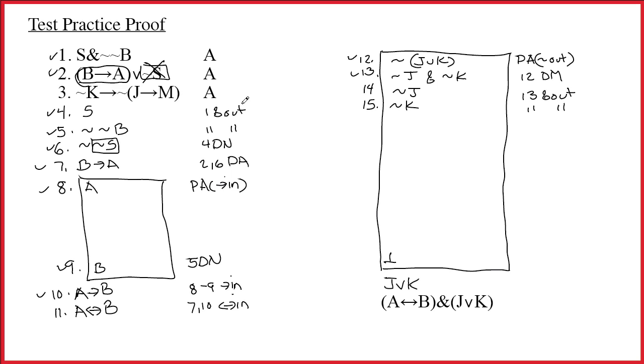And to do arrow out, we'd need tilde k. And, of course, we have that. So, on line sixteen, we now get to do the arrow out and get tilde j arrow m. This proof is winding down here. This will be three fifteen, arrow out. And notice, what's the main connective of what we just created? It's a tilde. That's always good news. And in this particular case, it means we get to do arrow exchange.